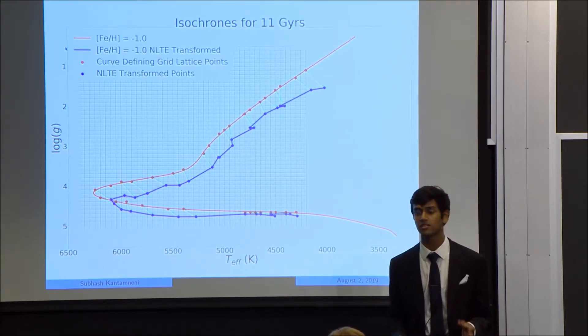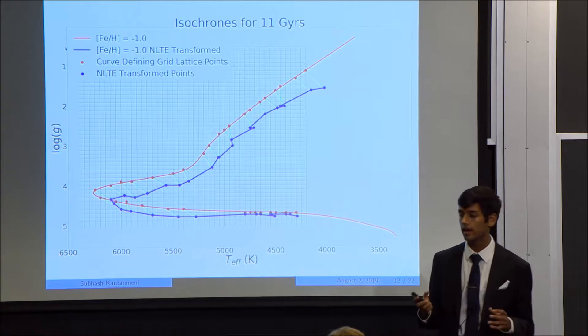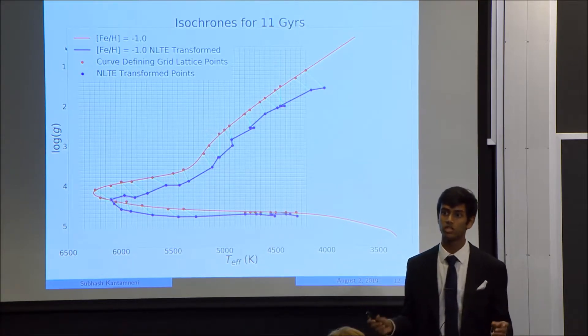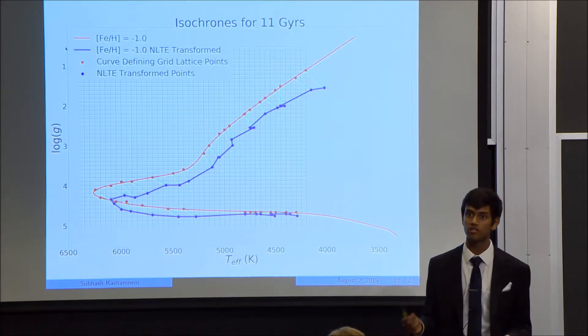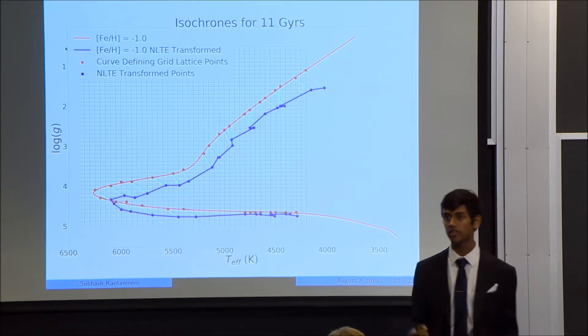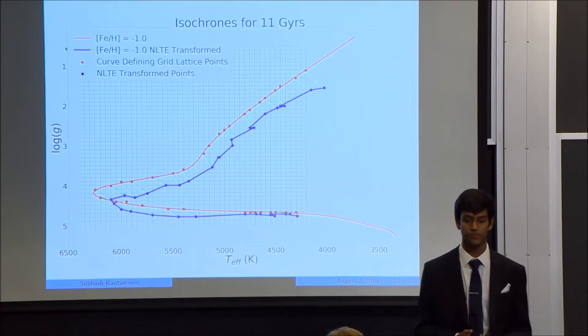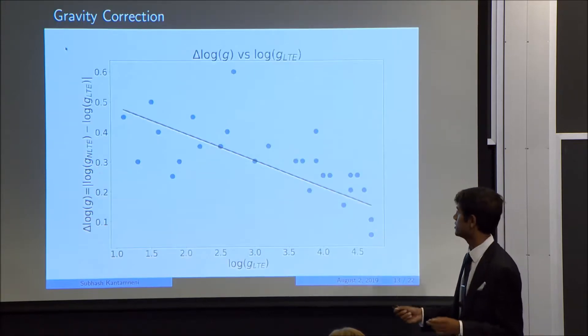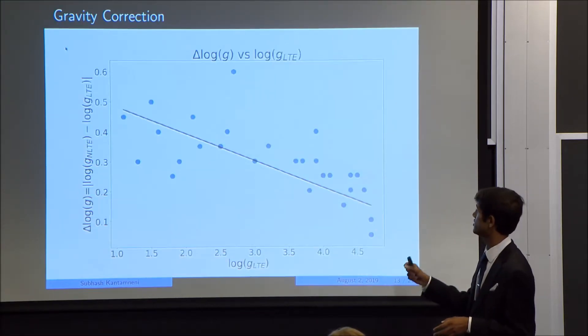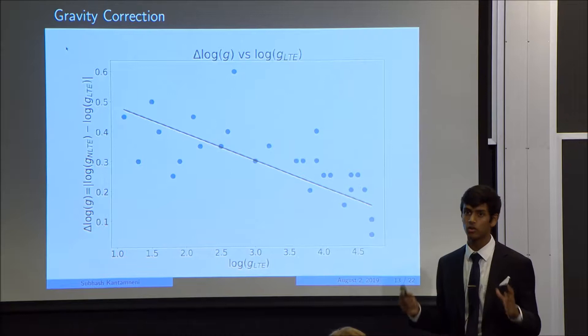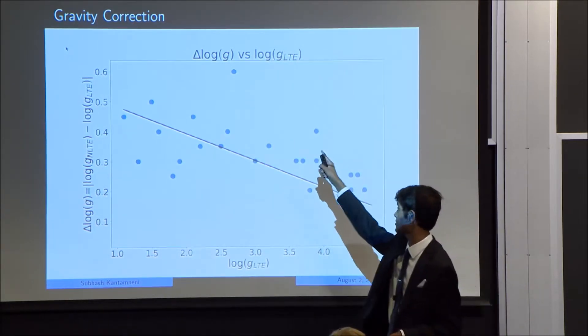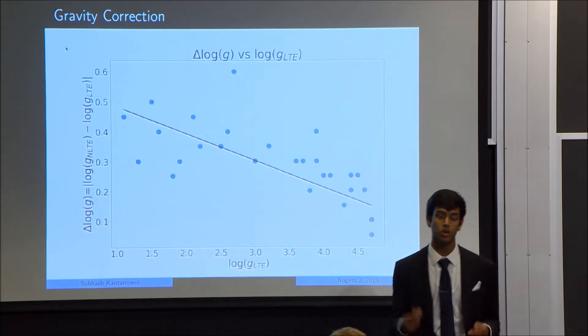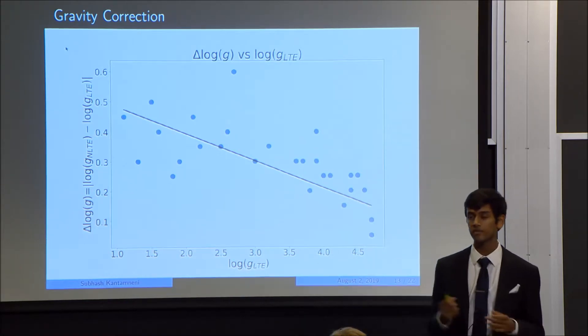And physically, this makes a lot of sense. A star with a lower surface gravity generally has an extended atmosphere, which means that they're a giant or supergiant star. And we said previously that the LTE approximation is not good for these stars. So obviously, the NLTE correction is higher for these stars. So we show the graph between the gravity correction and the original gravity here. You can see there's a rough linear correlation between the two variables. There's some outliers, especially right there, that are dragging down the linearity. But overall, it's pretty clearly linear. And from this single isochrone, it wasn't clear if a similar relationship existed between the temperature correction and the original temperature.